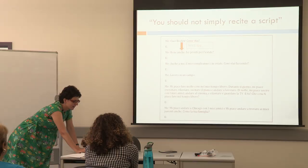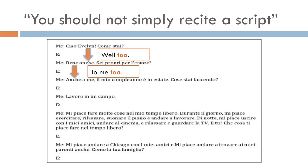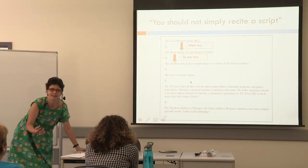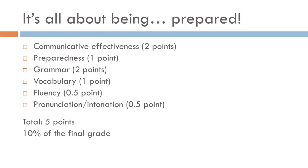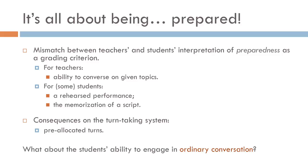What's interesting is that not only did one student plan what she was going to say, but she also knew in advance what the other person was going to tell her — she wrote things like 'bene anche' (well too) and 'anche a me' (me too). They really planned this thing. It's all about being prepared — and preparedness was one of the grading criteria. There is clearly a mismatch between what the teachers envision as preparedness and what the students envision. For the teachers, it was probably the ability to converse on given topics, whereas for the students, it was about performing a rehearsed script they had memorized.